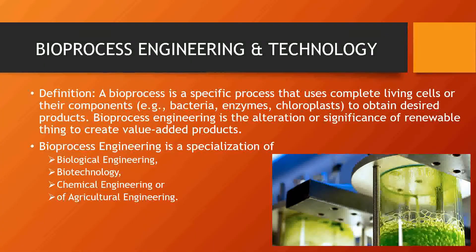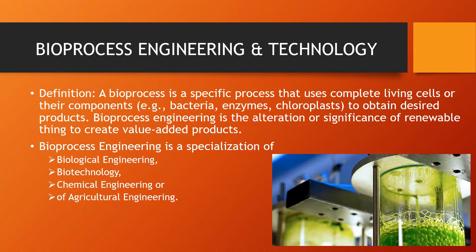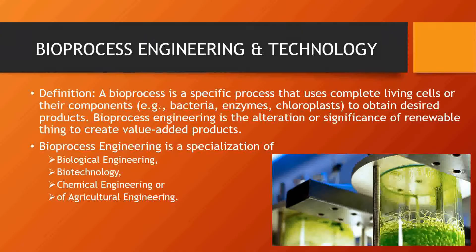Biological engineering means we engineer the microorganism to produce a specific product that we desire. Biotechnology helps through different techniques and tools to enhance the yield. Chemical engineering helps to enhance the yield and change the quality of the product by engineering the chemicals used in the process. And agriculture engineering is the engineering of growing the right kind of substrates for production of a particular product.